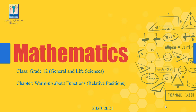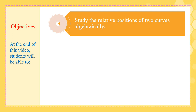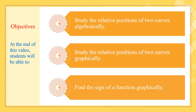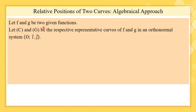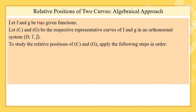As-salamu alaykum wa rahmatullahi wa barakatuh. Our chapter today is about relative positions. F and G are two given functions, and C and G are their representative curves in an orthonormal system. C is the representative curve of F, and G is the representative curve of G. To study the relative positions of C and G, we apply the following steps in order.